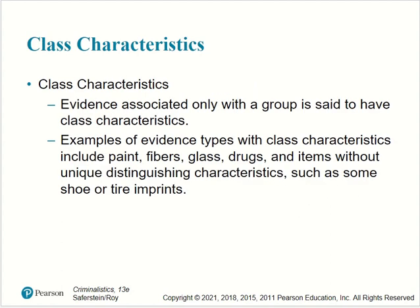Class characteristics: evidence associated with a group is said to have class characteristics. Examples of evidence types with class characteristics include paint, fibers, glass, drugs, and items without unique distinguishing characteristics, such as some shoe or tire imprints.